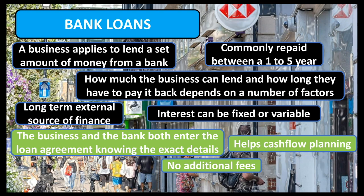However, there are a number of drawbacks to bank loans which businesses must consider. One of the most important drawbacks is the bank's legal right as a secured creditor with collateral over the business's assets. If the business gets into financial difficulty and fails to repay the loan, the bank has the legal right to acquire the business's assets before the shareholders. Also, dependent on the type of business, the owner's personal assets may be at risk.